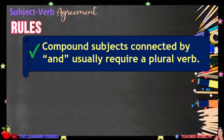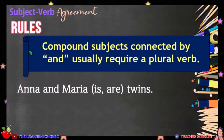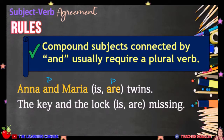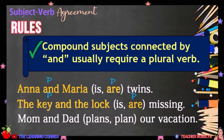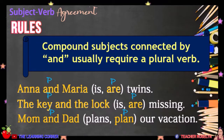Compound subjects connected by the word AND usually require a plural verb. For example, Anna and Maria are twins. The key and the lock are missing. Mom and Dad plan our vacation. These subjects connected by AND are all plural, therefore plural verbs will be used.